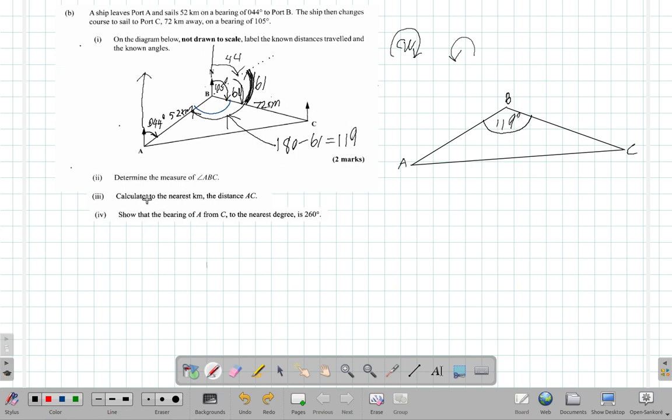Now I want to calculate to the nearest kilometer the distance AC, this distance here, same as this distance. Distance AC is how many? 52 kilometers and this is 72 kilometers.